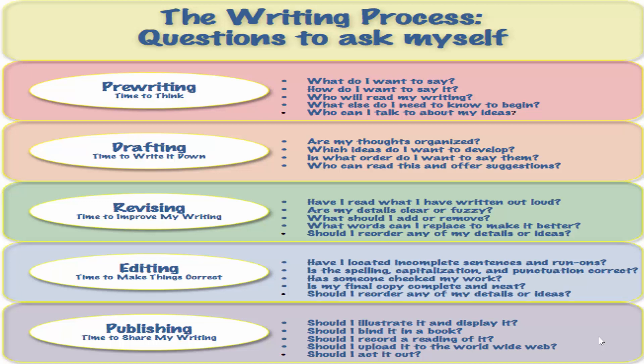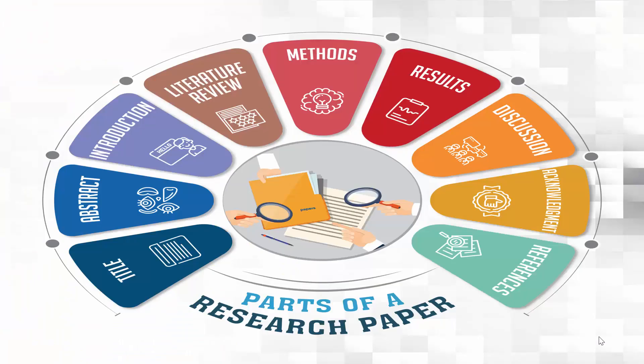Also involved are drafting, revising, editing, and publishing. What are the parts of a research paper? The parts include: title, abstract, introduction, literature review, methods, results, discussion, acknowledgement, and references.